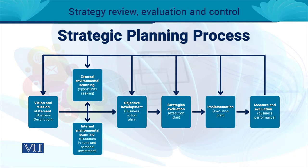उसके बाद आता है review and evaluation। ऐसा नहीं है कि बस आपने business शुरू कर दिया। इस process को देखें तो बार-बार arrows वापिस आ रहे हैं - कहीं भी कोई कमी हो, goal achieve नहीं हो रहा, sales growth, production, product design कोई भी चीज़ standards के मताबिक नहीं चल रही, या strategy plan के मताबिक result नहीं दे रही - तो आप उसको evaluate करते हैं और बार-बार revisit करते हैं। इस revisiting को ही strategy evaluation and control कहा जाता है।